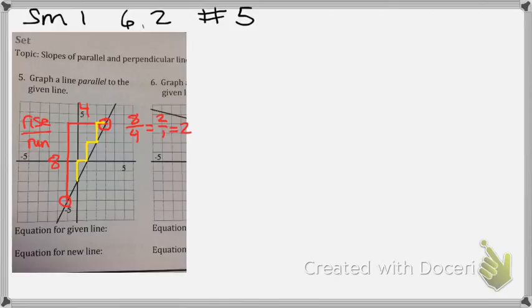So my slope is two. Okay, so now if I'm trying to do a parallel line, what do I know?